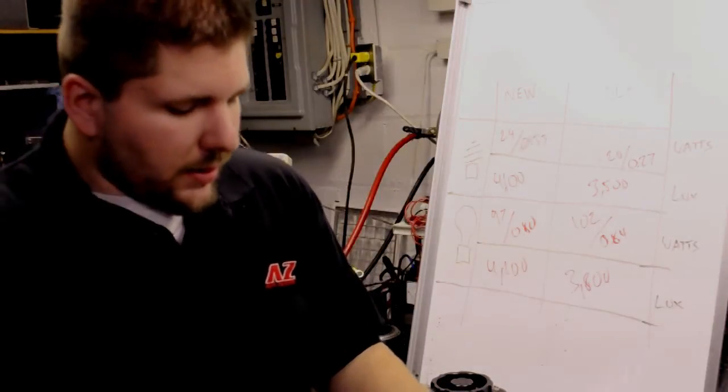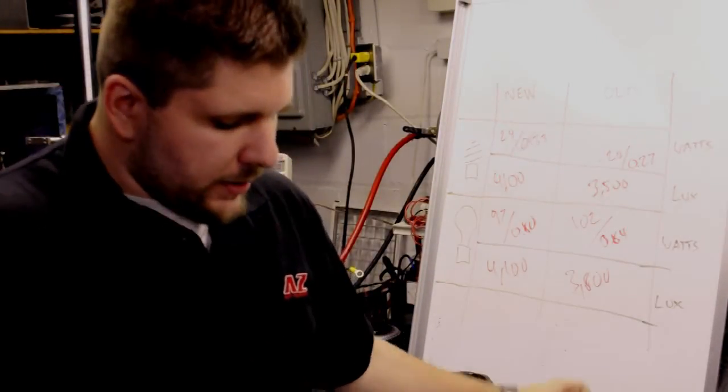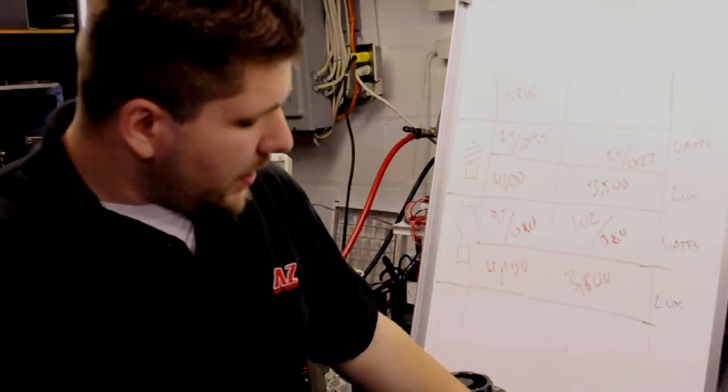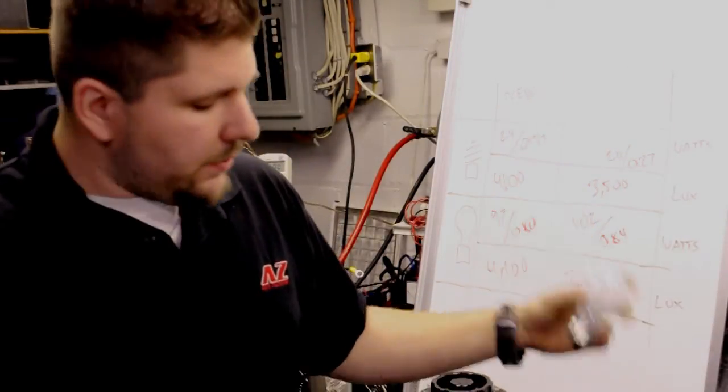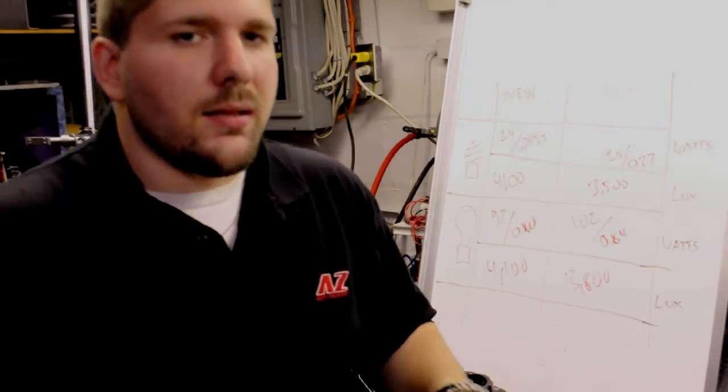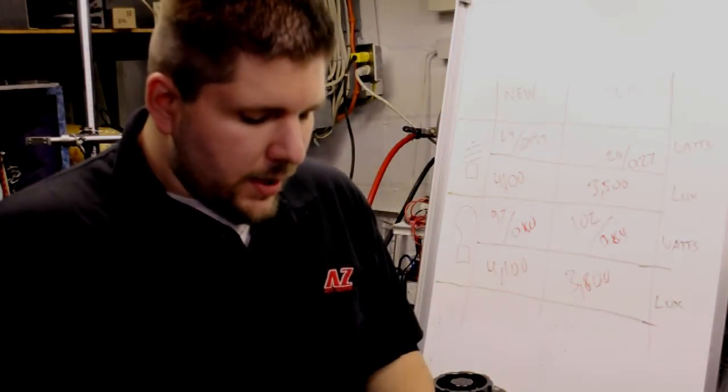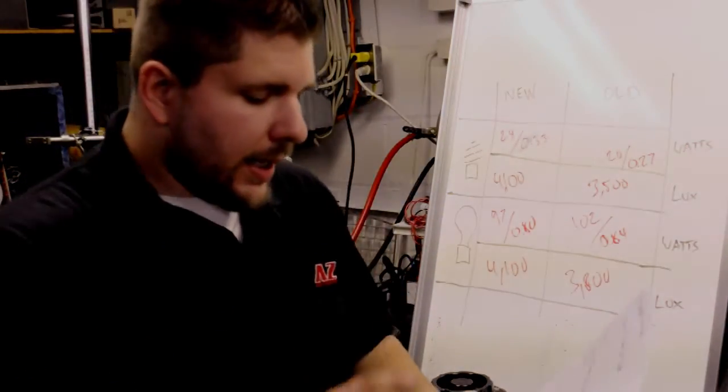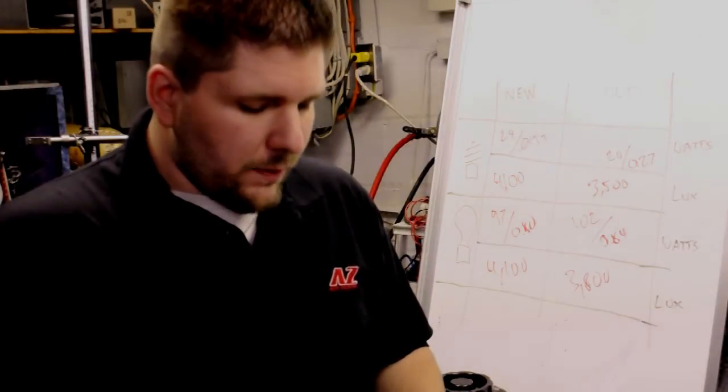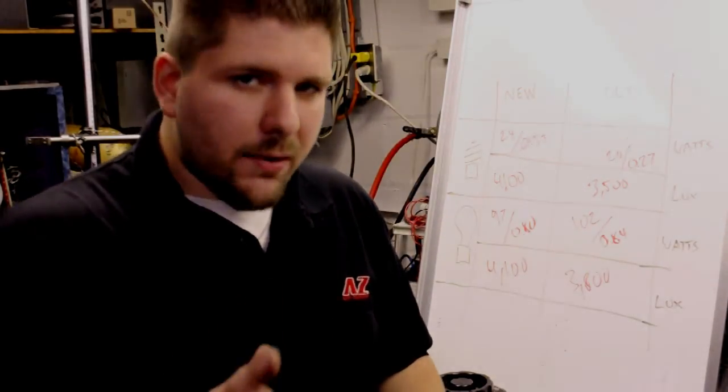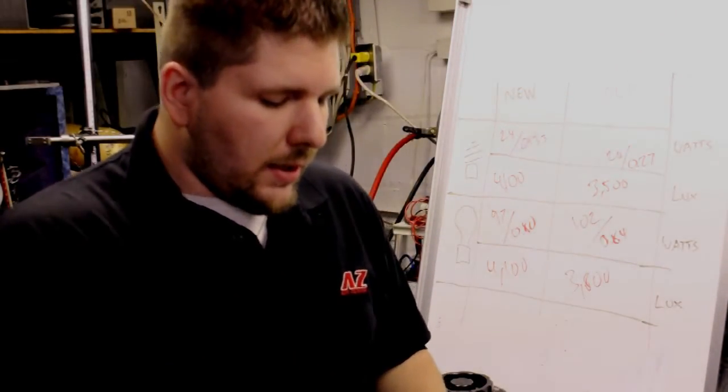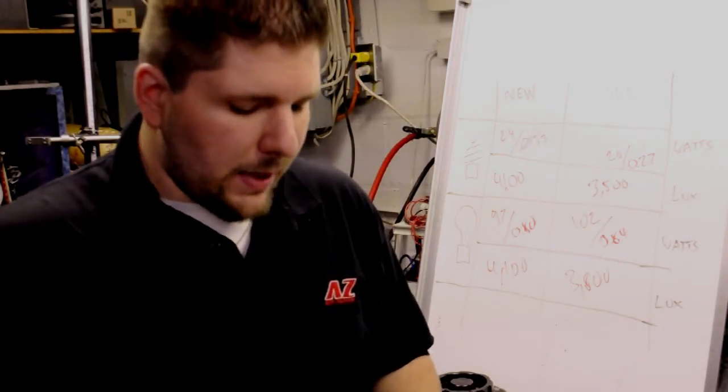So, if you take the average lifespan of a compact fluorescent, which is 6,000 hours, and then one of the incandescent, which is 1,000 hours, it takes about six incandescent light bulbs to run the same lifespan as one compact fluorescent. Now, if you take the power that I calculated here, and you break it out. Over a 1,000 hour span, which is three hours a day for one year, the incandescent bulb will use 100 kilowatt hours of power.